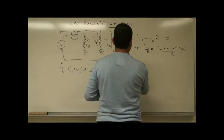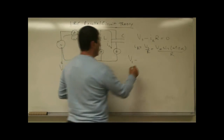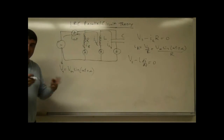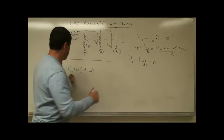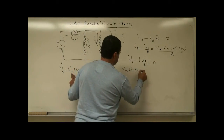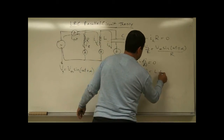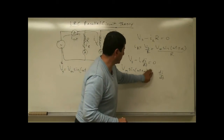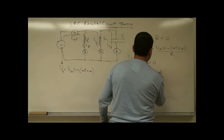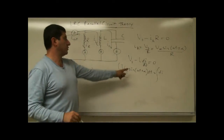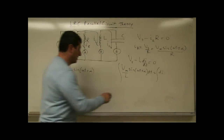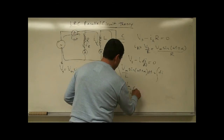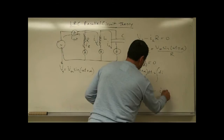For the inductance, we have V source minus L di/dt equals zero. So Vm sine(omega t + alpha) equals L di/dt. Moving L and dt and integrating, when we integrate the sine we get a negative cosine, and the omega comes down. So: minus Vm over (omega L) cosine(omega t + alpha) equals i(t), which is the current in the inductor.